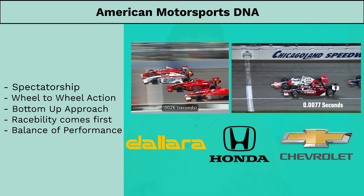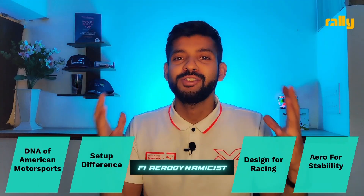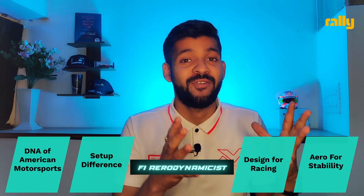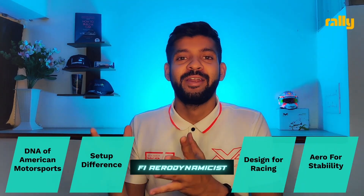Additionally, they also have something called the Balance of Performance, which limits the performance of your car if you are too far ahead of the competition. So if you were Red Bull in IndyCar, they would probably put additional ballast on your car to limit your performance, or limit your engine power to slow you down so that you are competing with the rest of the field and not just with yourself.